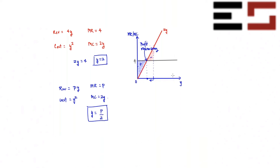If price is zero, marginal revenue is zero, and producing any positive output only generates losses, so the best choice is zero output. Also recall this is a decreasing returns to scale situation, because the cost function is increasing at an increasing rate.